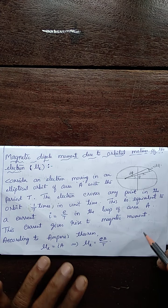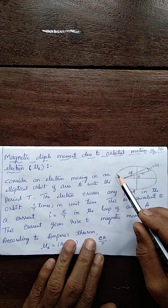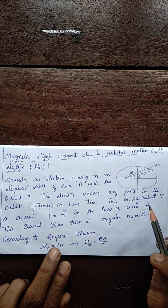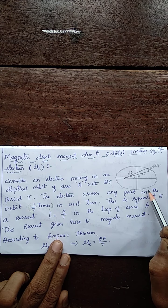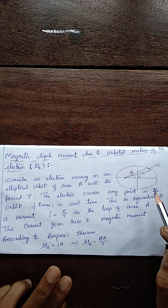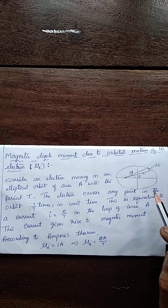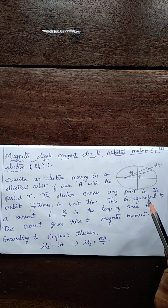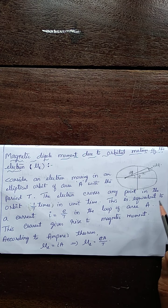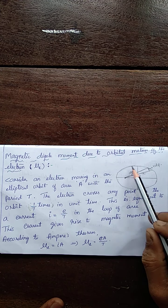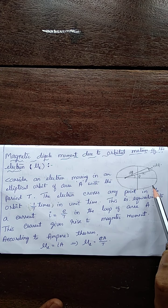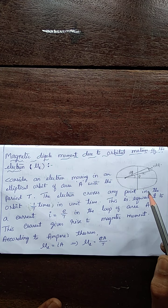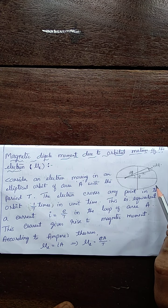Let us consider the revolving electron. The electron is revolving in the elliptical orbit. Let A be the area of this loop or elliptical orbit, and let T be the period of revolution of the electron in this elliptical orbit. The electron crosses any point of the elliptical path 1/T times per second.